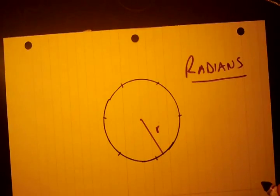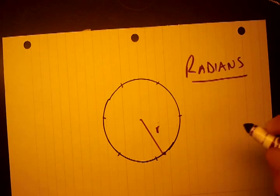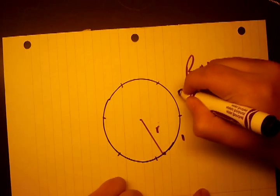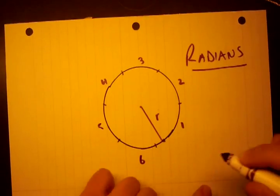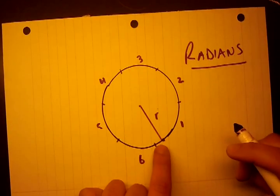So if we count how many times we've gone around. We started here. So here's one radius, two radii, three, four, five, six. And there's a little piece right there that didn't get covered.